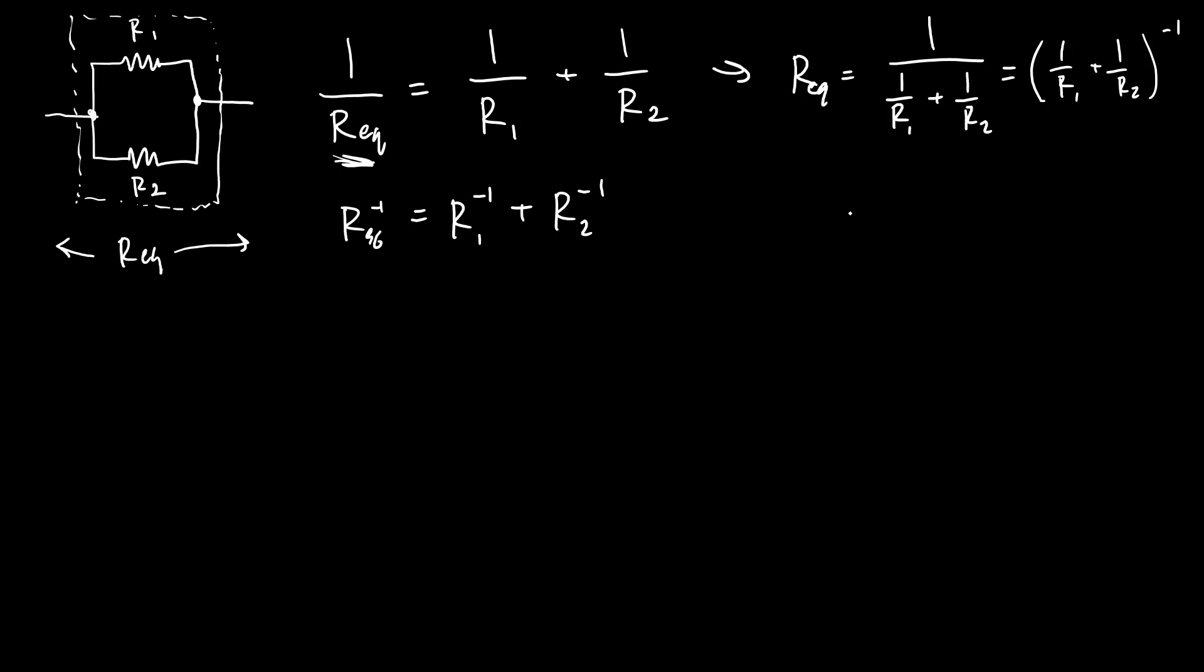That's true when you add them in series, right? So we covered this in the last video. When you put a bunch of resistors in series, then the equivalent resistance does go up. So the equivalent resistance in this case is just the sum of all the individual resistances because you're stacking these in series and the current through all of them is the same. So every additional resistor you put on is adding more resistance for that current to go through.